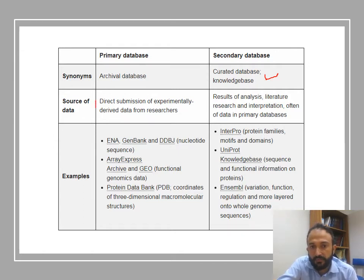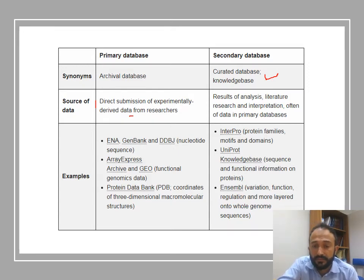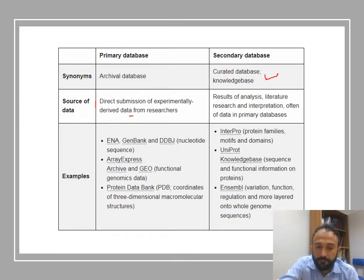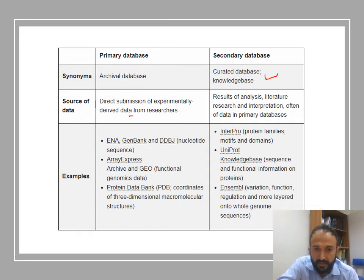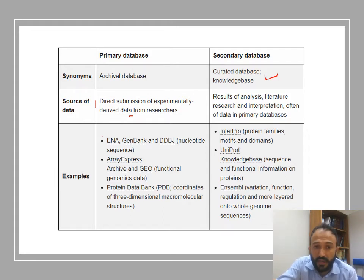The source of primary databases is direct submission of experimentally derived data from researchers. Examples of primary databases include the Nucleotide Archive, GenBank, and DDBJ as nucleotide sequence databases. ArrayExpress and GEO — the NCBI repository — store gene expression or mutation data. The Protein Data Bank (PDB) is a structure database where the first identified structures are stored.